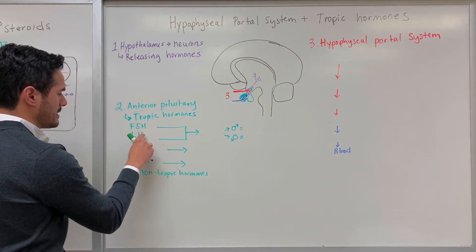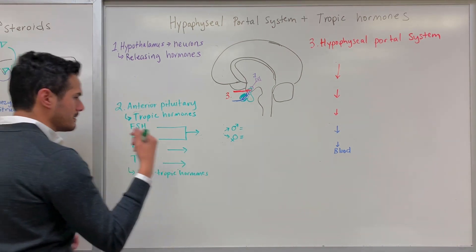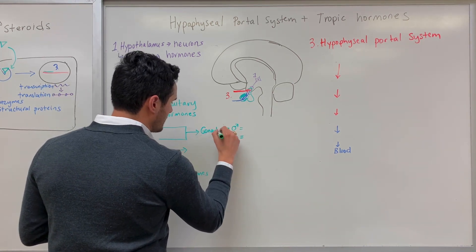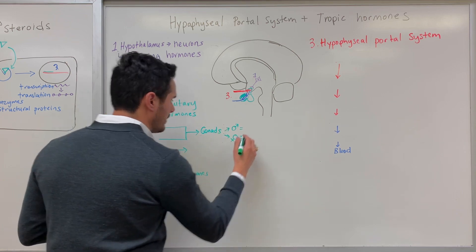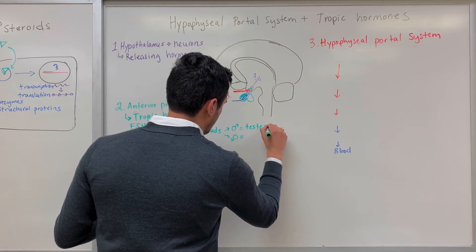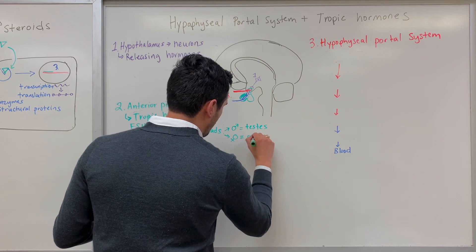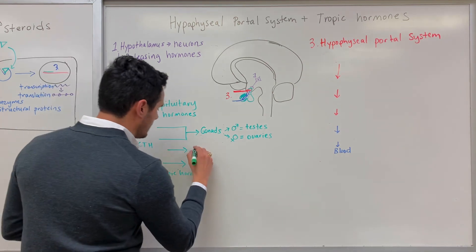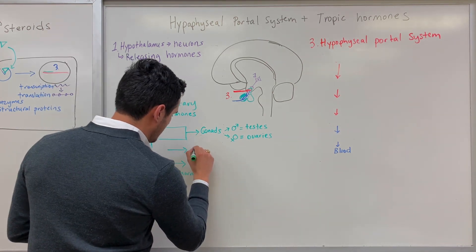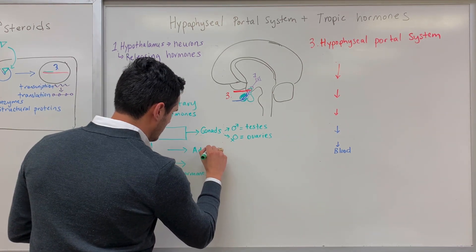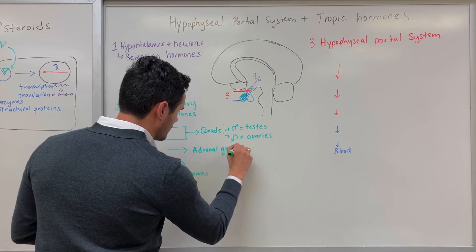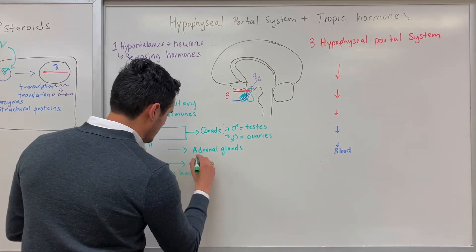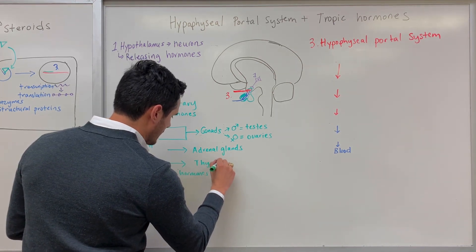FSH and LH have the gonads as their target endocrine gland — the testes in males and the ovaries in females. For ACTH, the target is the adrenal glands, and for thyroid stimulating hormone, as the name implies, it's the thyroid gland.